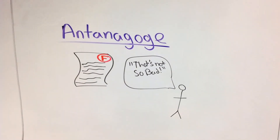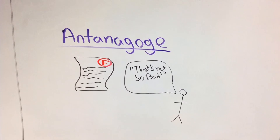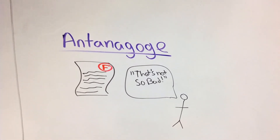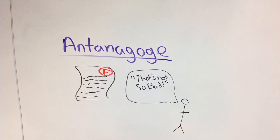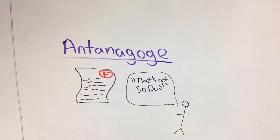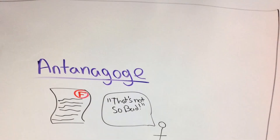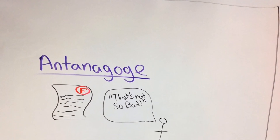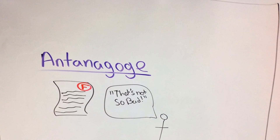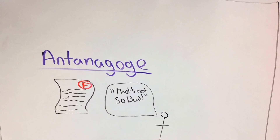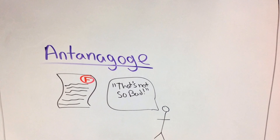Another example of antanaclasis would be if someone gets an F on a test or paper and their friend tells them, 'Oh, that's not so bad — I've gotten two Fs in that class.' This is an example of antanaclasis in real life because your friend is attempting to downplay the negative impact of you getting an F on that paper or test.